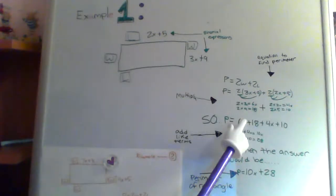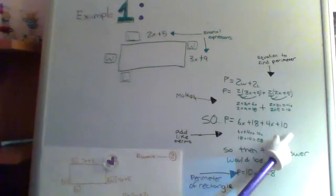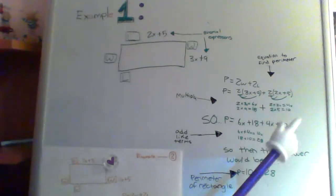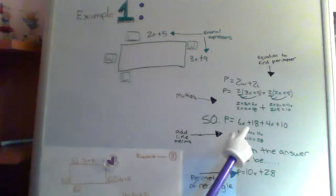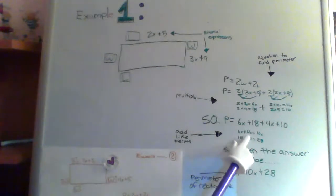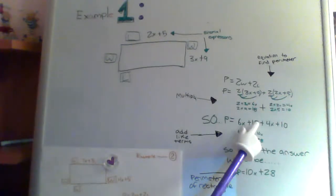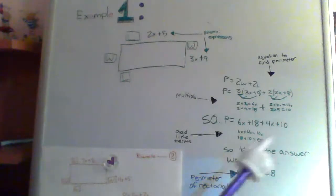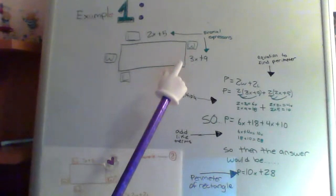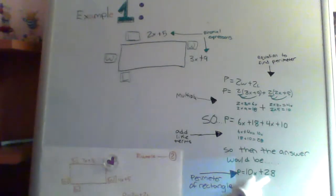Then you have to add the like terms — the X terms — together to simplify it. So you do 6X plus 4X, which equals 10X. And then 18 plus 10, which equals 28. So the perimeter for this rectangle would be P equals 10X plus 28.